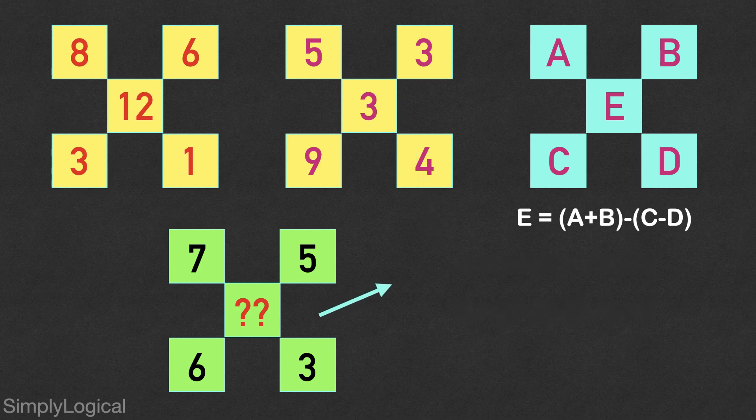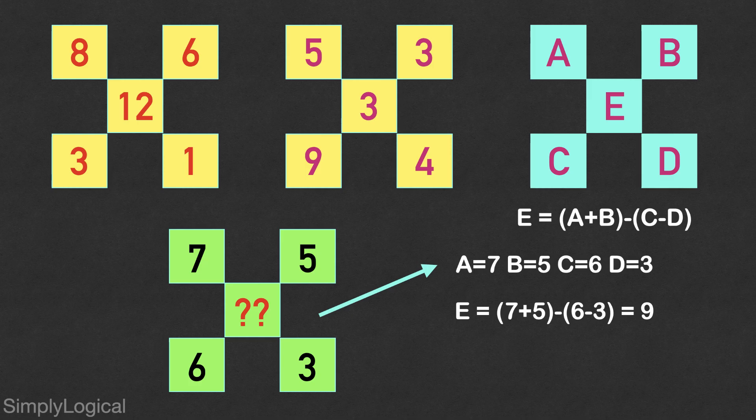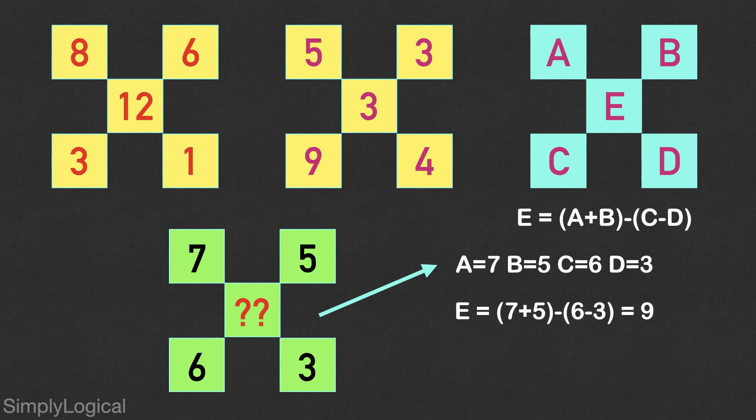So in the last figure, A equals 7, B equals 5, C equals 6 and D equals 3. Applying the same logic here, the expression becomes 7 plus 5 minus of 6 minus 3, which is equal to 12 minus 3, which is equal to 9. Hence, the solution to this particular problem is 9.